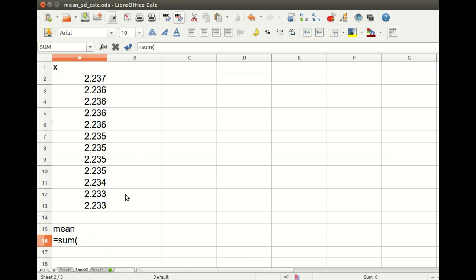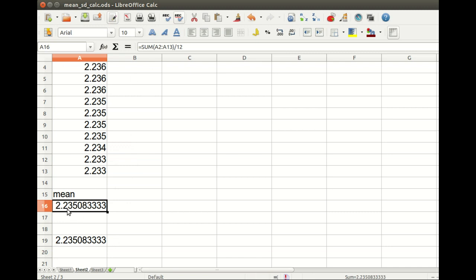So I will just take the sum of these and divide by the number of measurements, which is 12. And there is the mean. And I'll just point out I could have more easily used an internal function of the spreadsheet, average, and not have to bother dividing. But either way, there is the mean with many, many digits. And there will again be an issue of how many of those digits are actually significant figures.